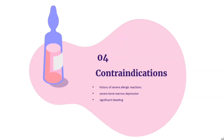Contraindication. Carboplatin injection is contraindicated in patients with a history of severe allergic reactions to cisplatin or other platinum-containing compounds. Carboplatin injection should not be employed in patients with severe bone marrow depression or significant bleeding.